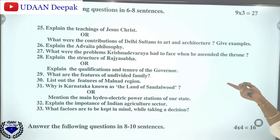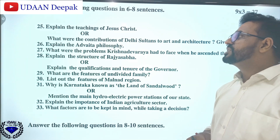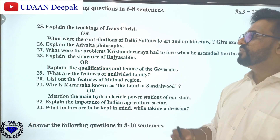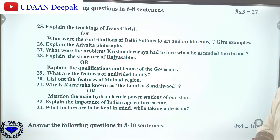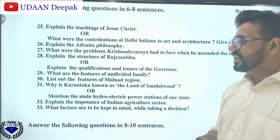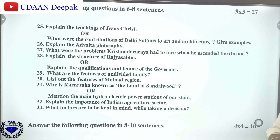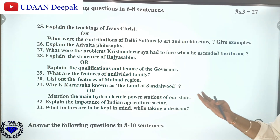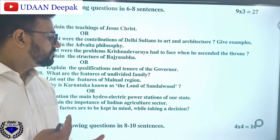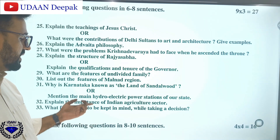Then you will be having three-mark questions with nine questions. In the first chapter only you will be having the teachings of Jesus Christ — this one is important. Then contributions of Delhi Sultans to art and architecture with examples. Advaita philosophy. Then Krishnadevaraya — what are the problems he faced? Structure of Rajasabha. Qualifications and tenure of the Karnataka Governor. Features of undivided family. Malnad region. Why Karnataka is called the land of the Western Ghats. Main hydropower stations of our state. Importance of Indian agriculture. What factors are kept in mind while taking a decision.